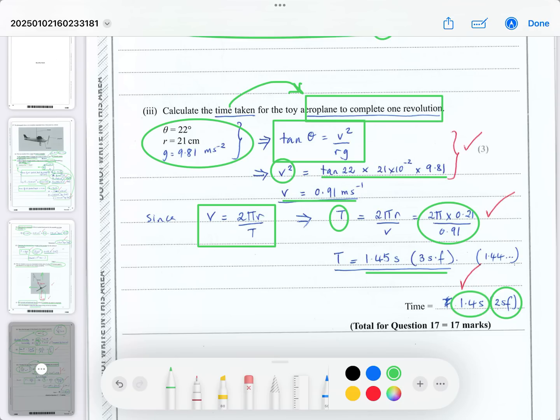To two significant figures, this rounds to 1.4 seconds. It's very close to 1.45, but technically the calculator shows 1.44449 or similar, so it rounds down to 1.4 seconds.